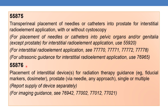The next CPT is 55876 — placement of interstitial device for radiation therapy guidance; for example, fiducial markers or dosimetry, prostate via needle, any approach, single or multiple. Report the supply of device separately. For imaging guidance, see 76942, 77002, 77012, and 77021.